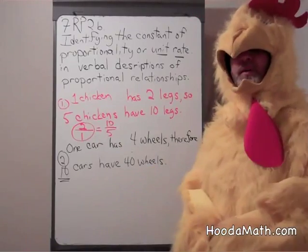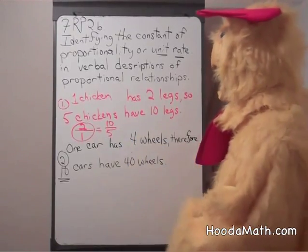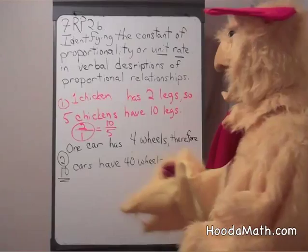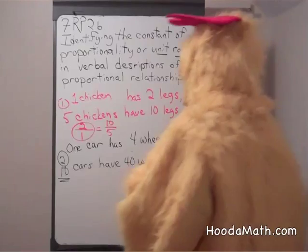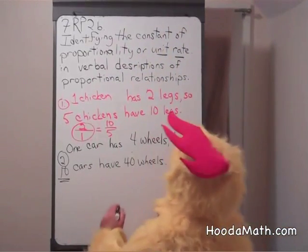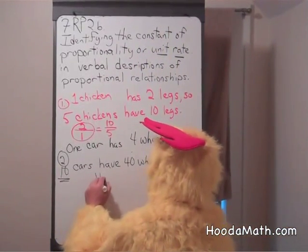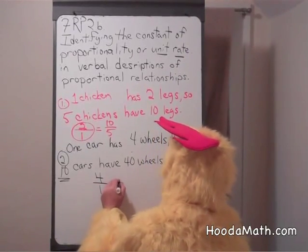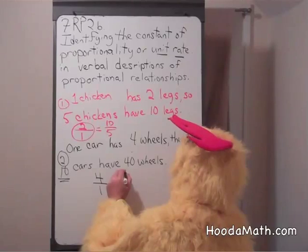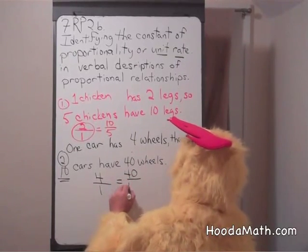Another one. One car has four wheels, therefore ten cars have forty wheels. If we wrote the proportion, four wheels per one car, that equals forty wheels per ten cars.